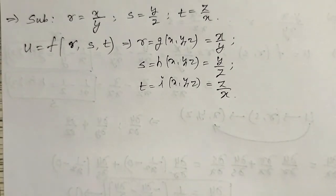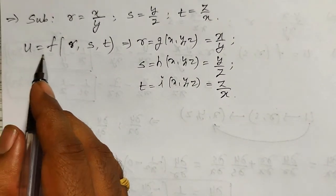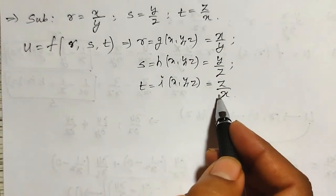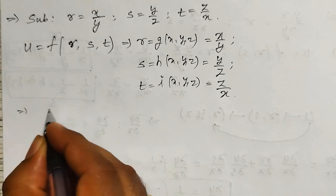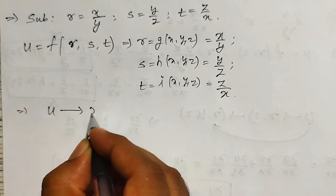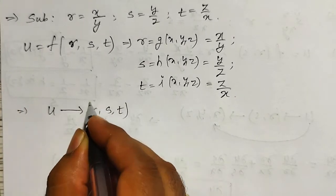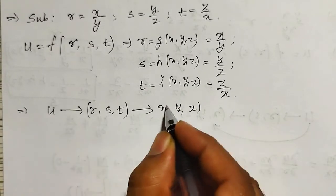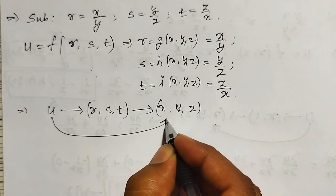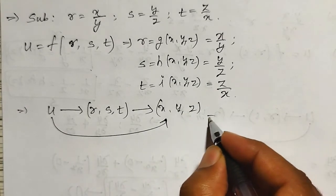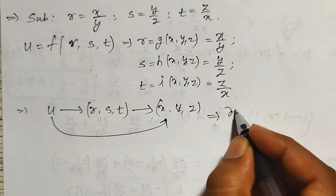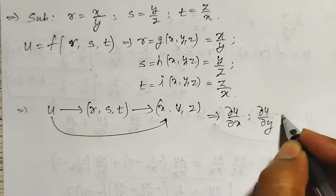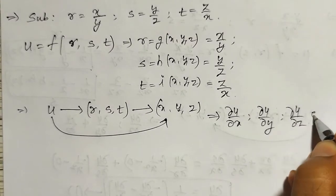Like that, t is also some function of x, y, z and it is z divided by x. Now what you are observing is U is a function of r, s, t, and r, s, t are the functions of x, y, z. Therefore U is indirectly a function of x, y, z. Then there exist three partial derivatives: dou u by dou x, dou u by dou y, and dou u by dou z.